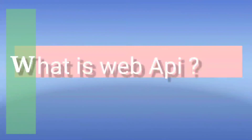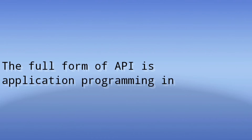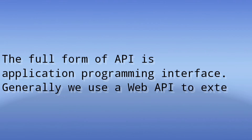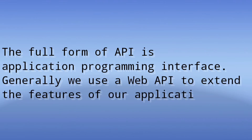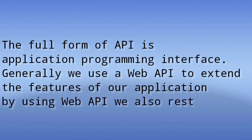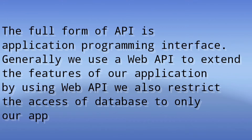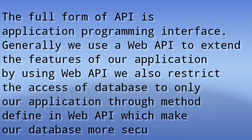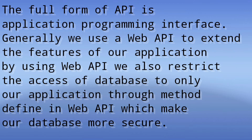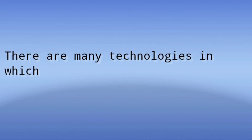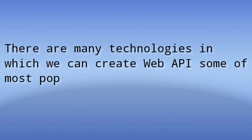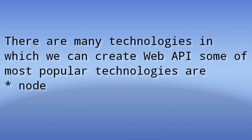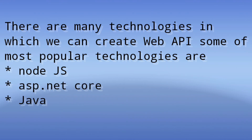What is Web API? The full form of API is Application Programming Interface. We use a Web API to extend the features of our application. By using Web API, we also restrict access to the database to only our application through methods defined in Web API, which makes our database more secure. There are many technologies in which we can create Web API. Some of the most popular technologies are Node.js, ASP.NET Core, and Java.